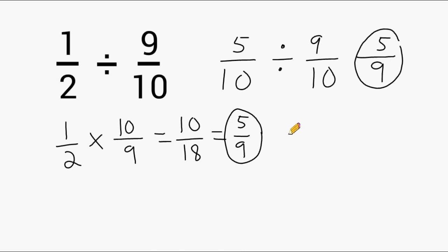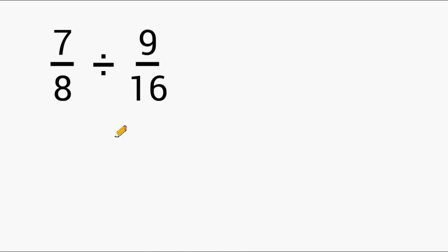Let's do one more example. This time we're going to do the keep change flip method first. So we're going to start with 7 eighths and we are going to multiply that by 16 ninths. Now if we go ahead and multiply our numerators together, we end up getting 112. And our denominators produce 72.